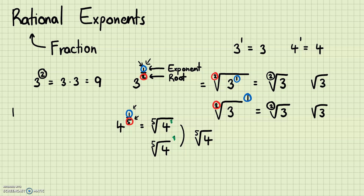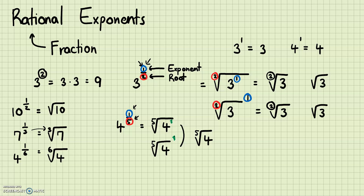Once you get comfortable with this, you'll notice different cases. For example, 10 to the 1/2 equals the square root of 10 — the denominator tells you the root and the numerator is just 1. Similarly, 7 to the 1/3 is the cube root of 7, and 4 to the 1/6 is the sixth root of 4. The denominator of the fraction gives you the root of that number.